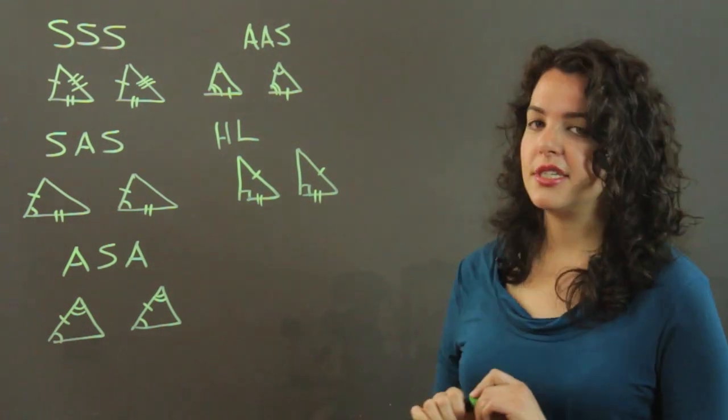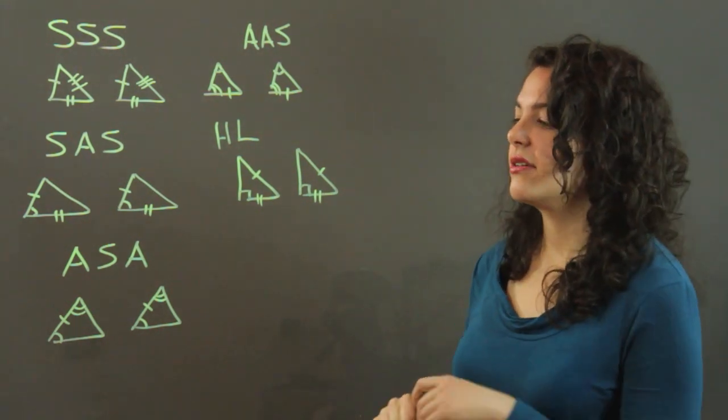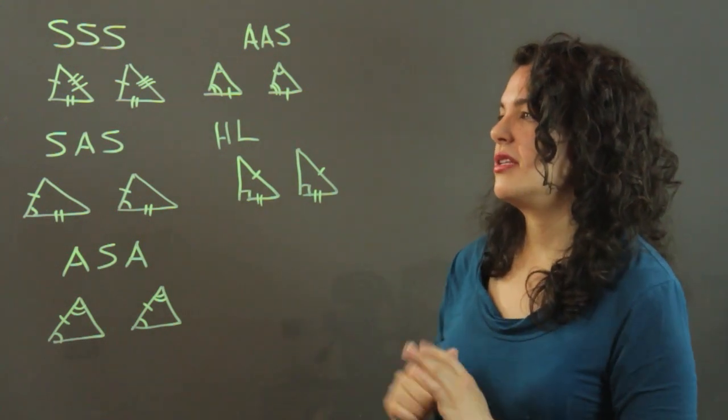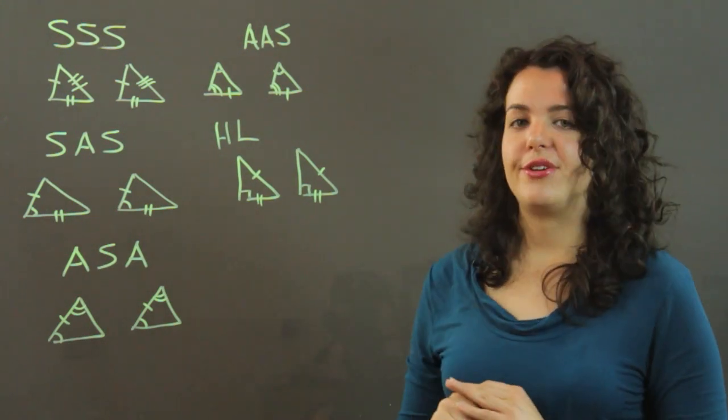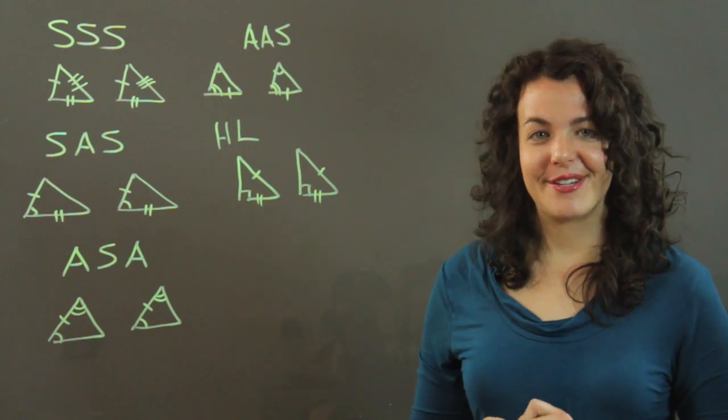So in general, you need to see that there are three corresponding parts that are congruent to tell that you have congruent triangles. My name's Julia. Thank you.